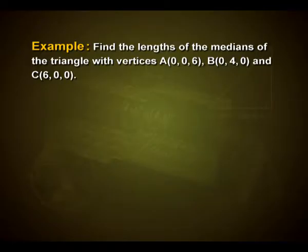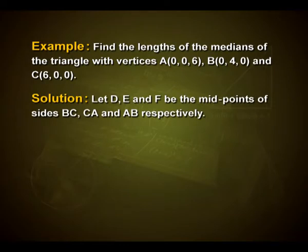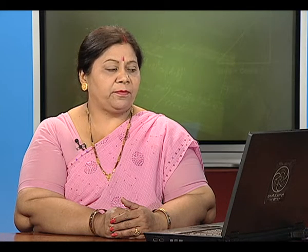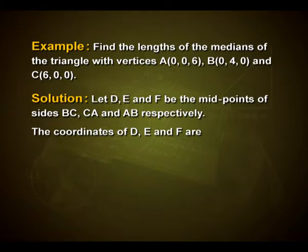Let us look into one more example. Find the lengths of the medians of the triangle with vertices A(0, 0, 6), B(0, 4, 0), and C(6, 0, 0). Let D, E, and F be the midpoints of sides BC, CA, and AB respectively. The coordinates of midpoints are found using the formula (x1+x2)/2, (y1+y2)/2, (z1+z2)/2.